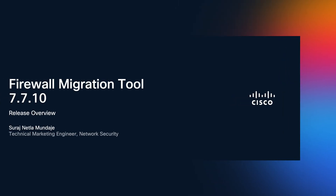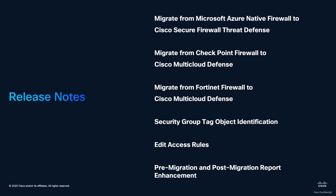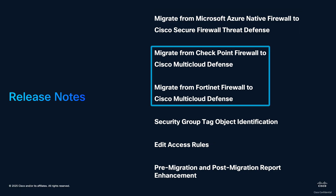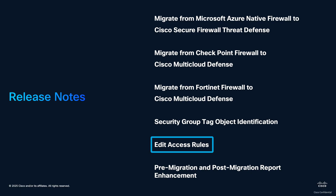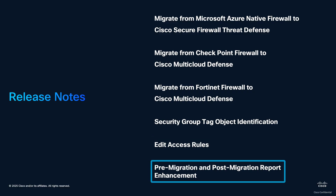Hi and welcome to this video where we'll be going over the latest features released in FMT 7.7.10. Here are the release notes: migration from Azure native firewall to Cisco Firewall Threat Defense; migration from Checkpoint and Fortinet firewall to Cisco Multicloud Defense; ability to identify security group tags in ASA conflicts; you can now edit rules within FMT; and finally, enhancements to pre and post migration reports. Let's go over each of them through some demos.